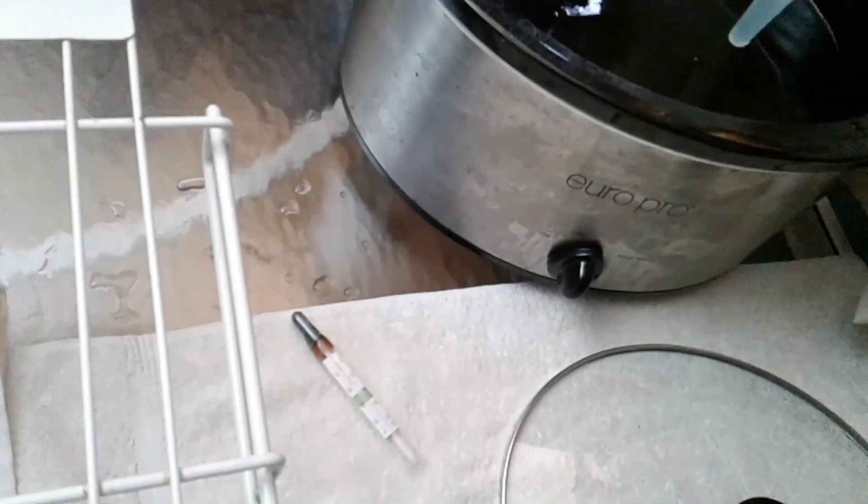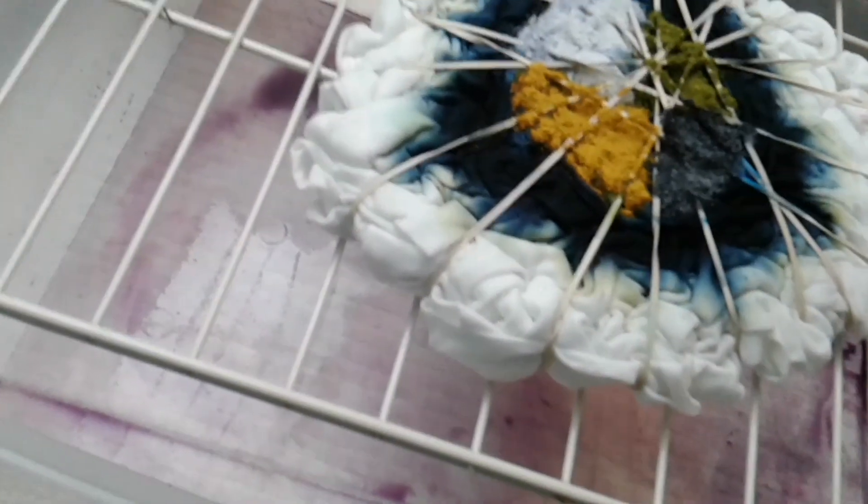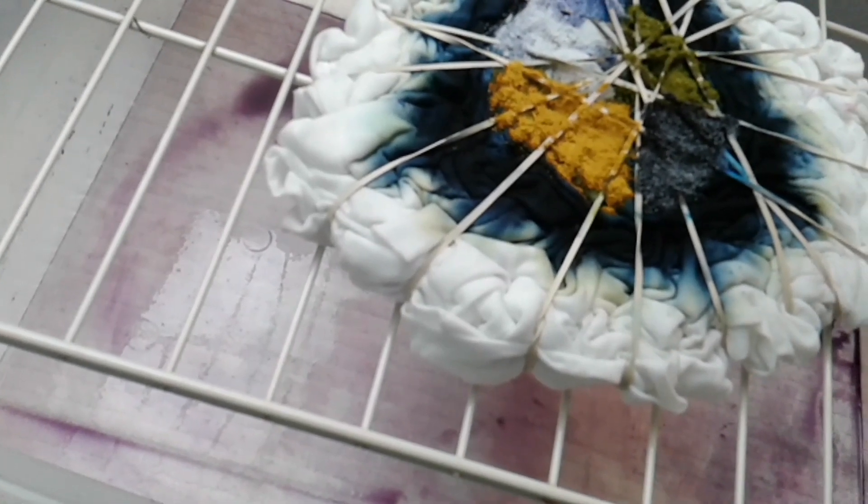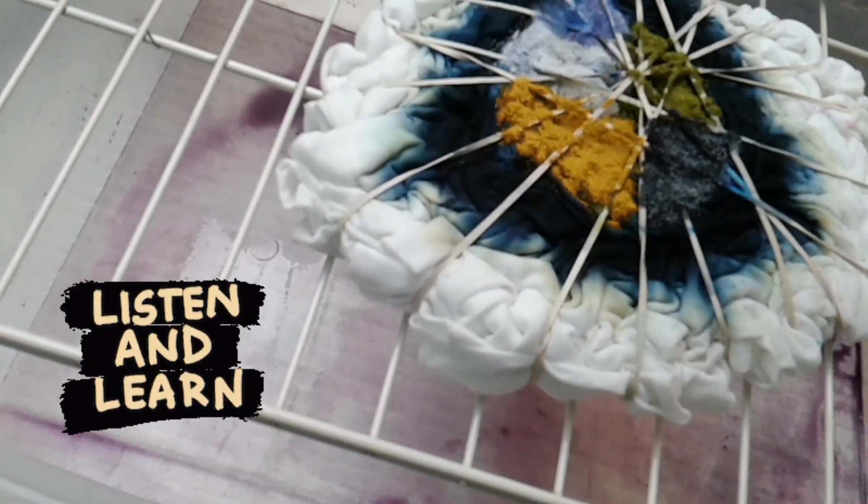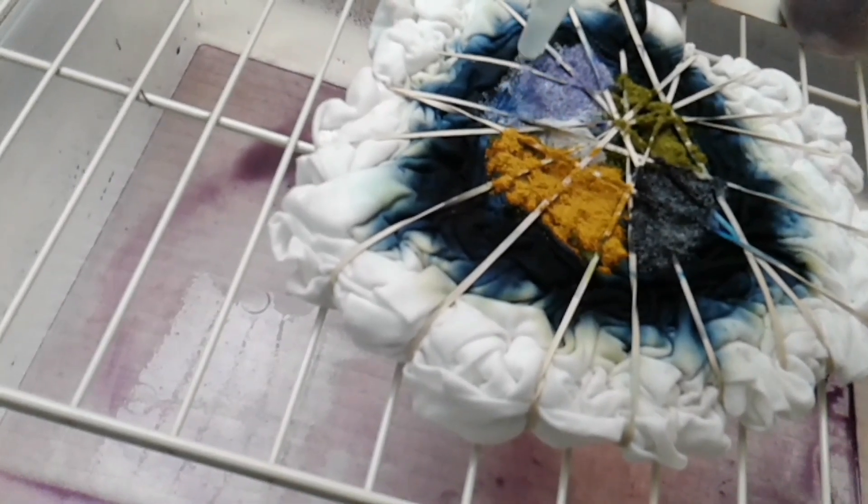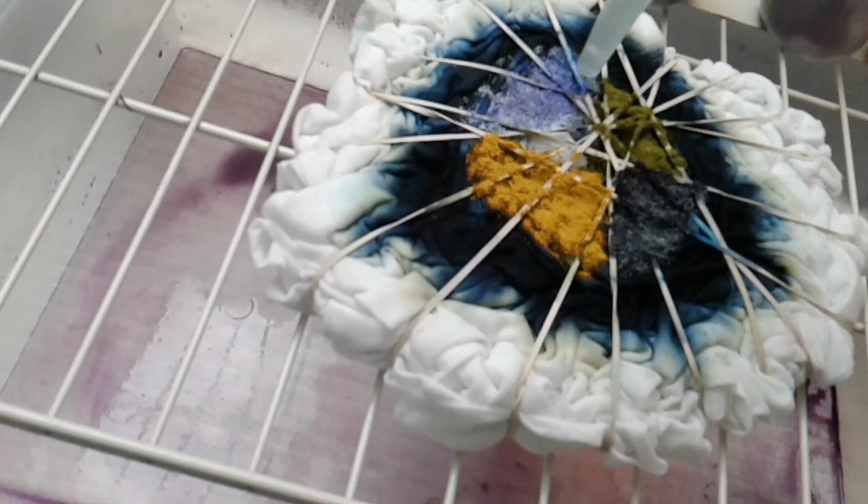Got a full one-ounce turkey baster full. Like I said, we're going to start over here with the baby blue first because it's the lightest color. Get that to try to set first, and I'll go through all these other colors. Then we'll work on the outer rim.